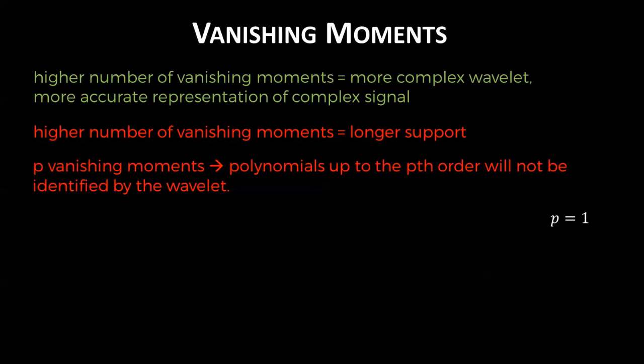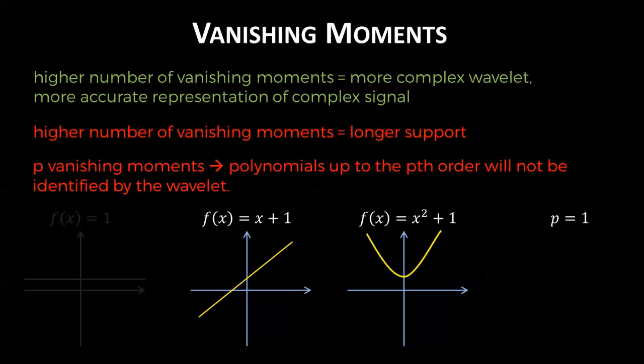So for a wavelet with only one vanishing moment, we are able to respond to all the signals in yellow, but not a function of constant value. With a wavelet of two vanishing moments, we no longer identify linear signals. Finally, with a wavelet that has three vanishing moments, we no longer identify quadratic signals.